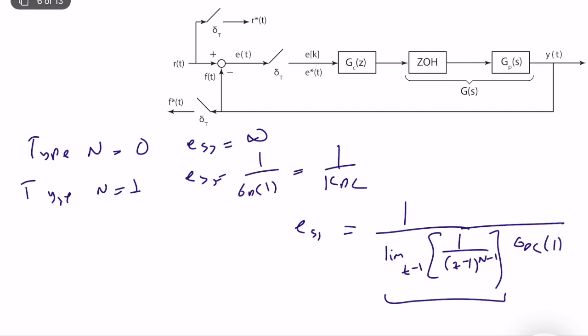For type n > 1 (e.g., n = 2, 3, ...), the limit goes to infinity, so the steady-state error goes to zero for ramp inputs.